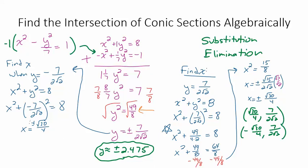Okay, so what that tells me is if x is positive square root 30 over 4, y could be negative 7 over 2 root 2. And if x is negative square root 30 over 4, y is negative 7 over 2 root 2. So there's our four intersection points.